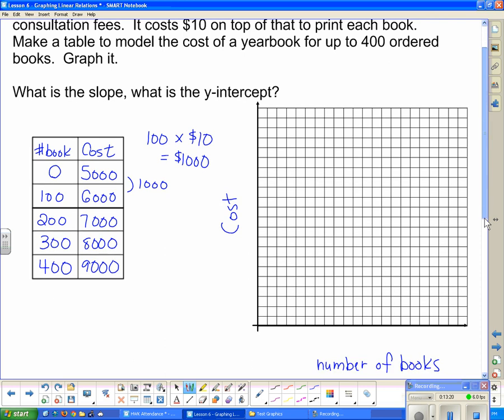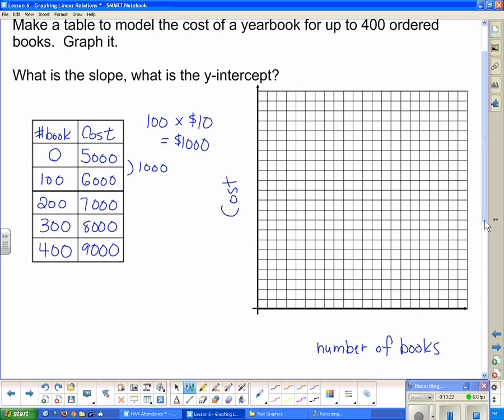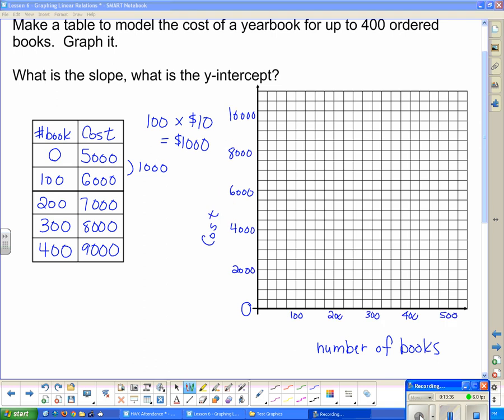Now I need to pick a suitable scale on here. The costs are in thousands, and I need to get from 0 to 9,000. And number of books, I need to get to 400. So I'm going to put on a scale here. Okay, so there's the scale I chose. So for zero books, it's at $5,000, which would be right here. And we don't need to plot all of those on there. I can go to 400 books and put the 9,000 one on, which would be right there, and draw my line. And there we go.